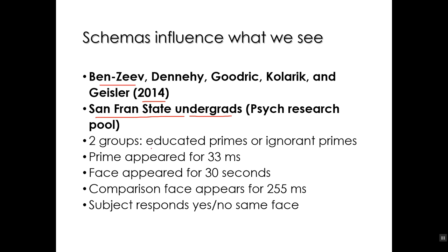One group received educated primes, or the word 'educated' as a prime. And the other received the word 'ignorant' as a prime. The prime appeared for just 33 milliseconds — apparently nothing at all. Then a face appeared for 30 seconds. They were to study the face for the 30 seconds, and then after that, a comparison face appeared for 255 milliseconds.